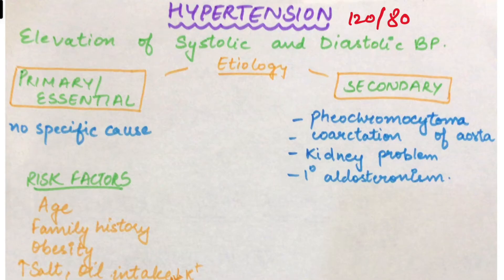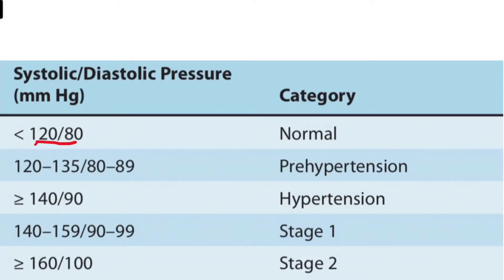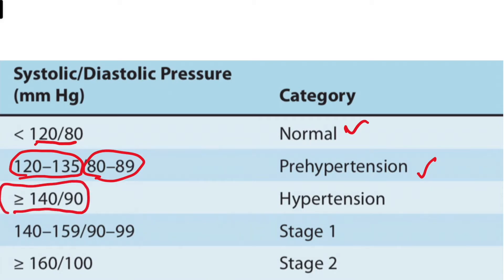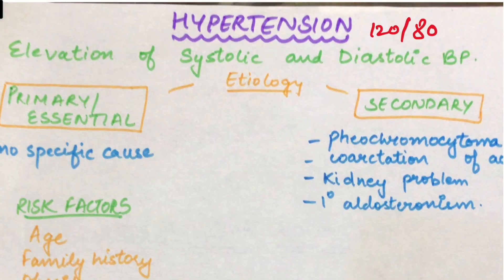Ab hypertension ki classification: 120/80 ya usse kam — that is normal. 120 to 135 systolic aur 80 to 89 diastolic — that is pre-hypertension. 140 to 159 systolic ho jai to stage 1, aur 160/100 se upar ho jai to stage 2. Ab yeh jo hypertension hai, is ki etiology kya hoti hai?